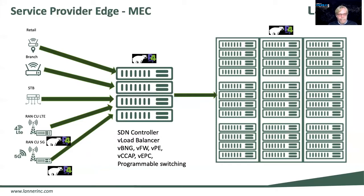We have our retail locations and branches for SD-WAN and universal CPEs, and from a cable operator aspect, set-top boxes, which all feed into the same edge compute platform to be aggregated. Then we deploy virtual BNG — which is the broadband network gateway — which is load balancer, which is firewall, which is provider edge, which is EPC, and so on. What we do differently here is we integrate switching and networking into the same platform, in addition to compute, and it's all software-defined — all internal connectivity without the need for a top-of-rack switch.